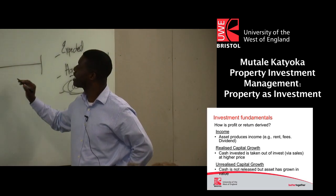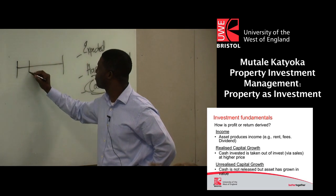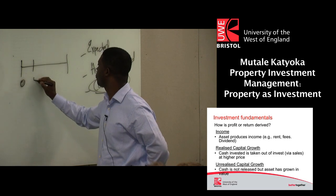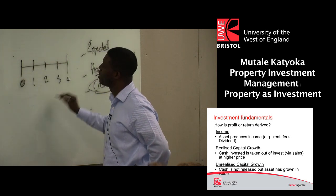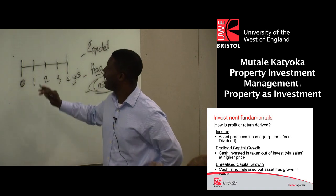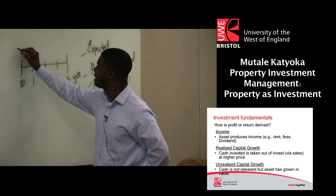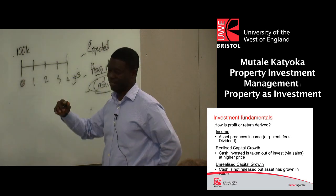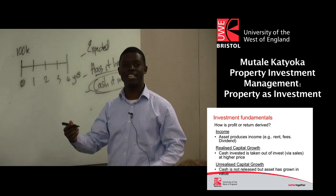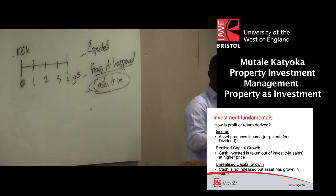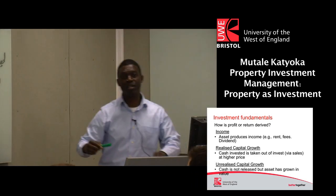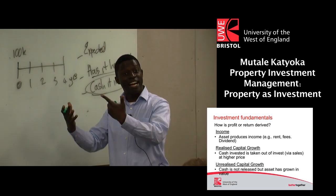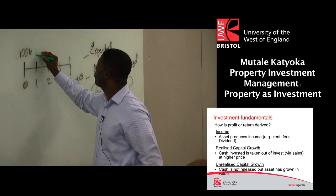We have years zero, one, two, three, four on the axis. So these are the number of years. And when we actually bought it, say it was worth 100K. Let's be optimistic — there's a lot of gloom going around — so let's say property prices are rising. After year one, we've made 105.